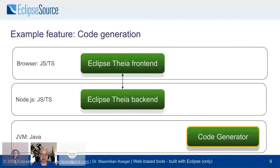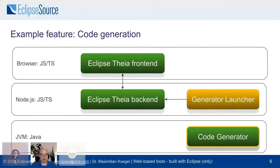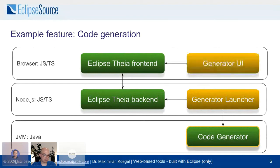If you reuse a code generator, you need this glue code — a couple of lines of code, a main method in a Java class. Then you need a backend extension for Eclipse Theia: a generator launcher. The generator launcher is responsible for launching the external code generation process — it finds out where the workspace is by asking the Theia backend, passes the current model file, spawns the process, and optionally monitors progress. The missing link is that the user needs to trigger this, so for our example the user can right-click the model file and select 'Generate Code' from the context menu — that's contributed by the generator UI, which then triggers the generator launcher.